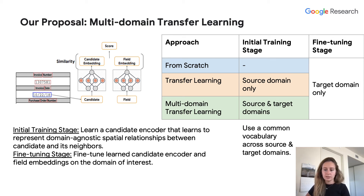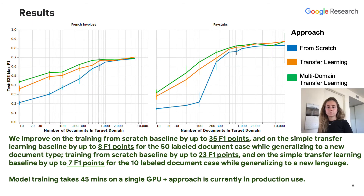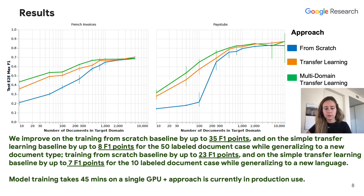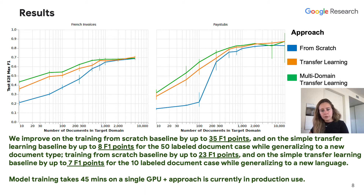Our results indicate that our proposed multi-domain transfer learning approach enables remarkable data-efficient generalization, both from English invoices to considerably structurally different new document-type pay stubs, and from English invoices to French invoices, consistently improving over both training from scratch and simple transfer learning baselines up to 1,000 labeled documents. The value of our proposed approach is particularly impressive in low data regimes — we improve on the train-from-scratch baseline by up to 35 F1 points, and on the simple transfer learning baseline by up to 8 points for the 50 labeled document case.